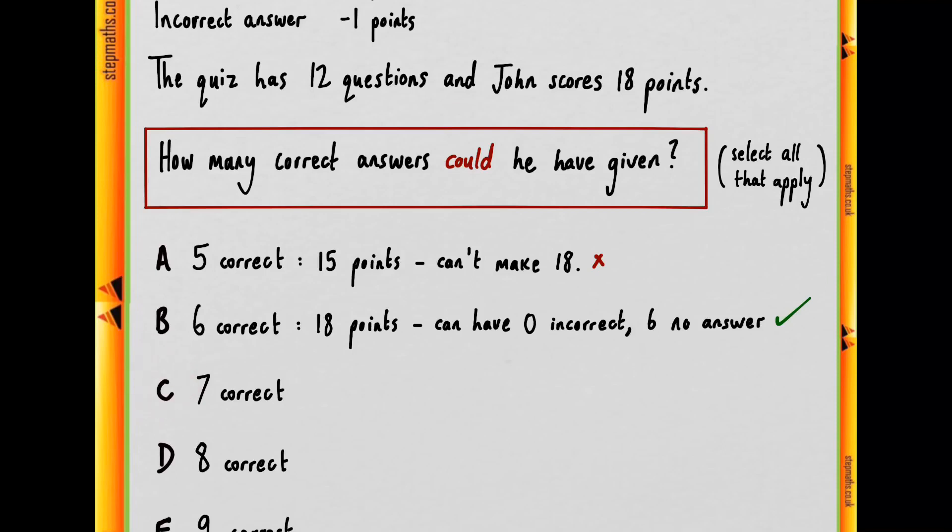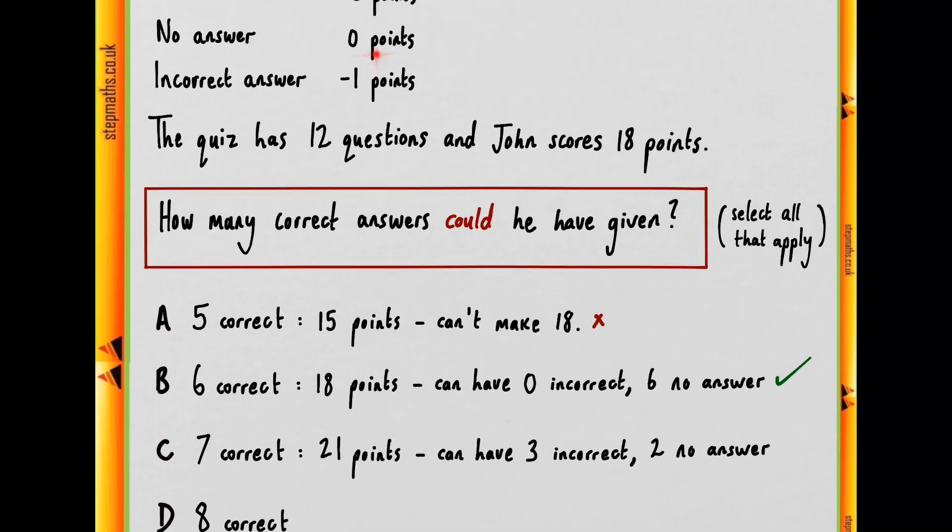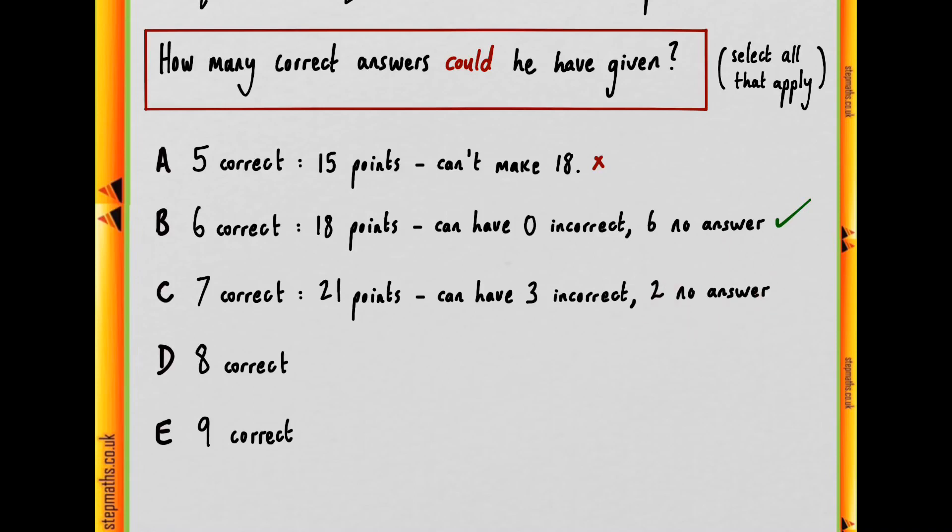Let's move on to C, where we have seven correct. Again, multiplied by three, that's 21 points. And you can say that he can have three incorrect, take him down to 18, because each one is minus one. And then you can say the remaining two would be no answer, and that gives you 18.